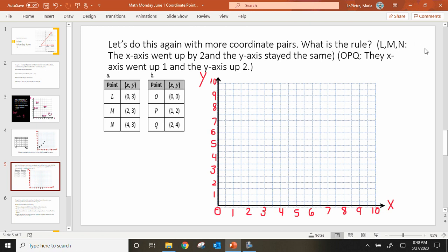Let's do this again with more coordinate pairs. What is the rule? L, M, N: The x-axis went up by 2 and the y-axis stayed the same. Let's try L, M, N first and then do O, P, Q second. L, the X and the Y. Zero. Nowhere on the X and then going up to three. I'm going to put my point on that and label it L. M, two, over two, up three. I'm going to label that M.